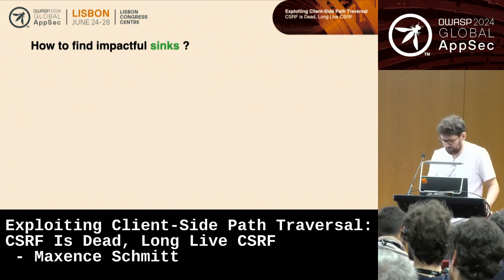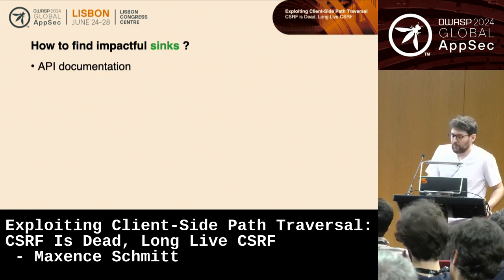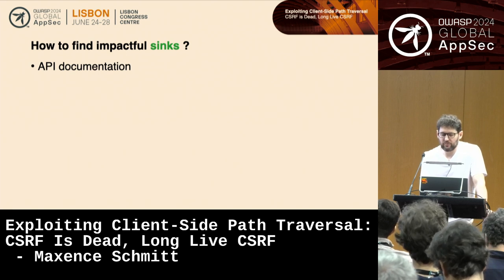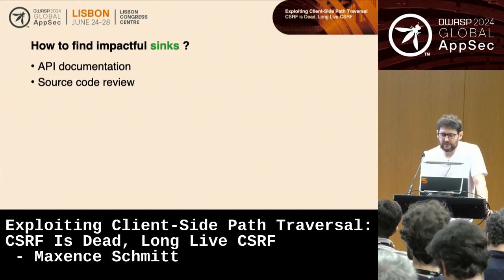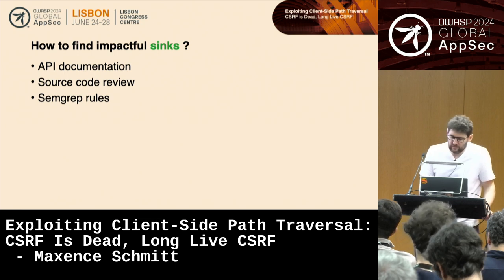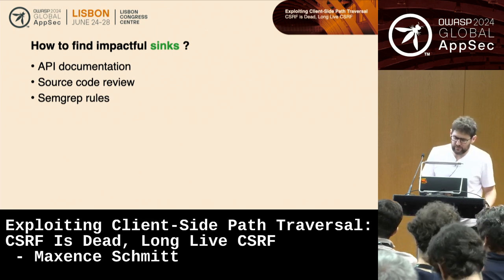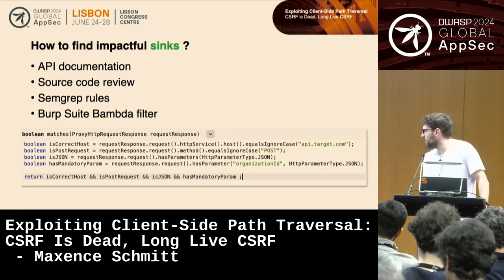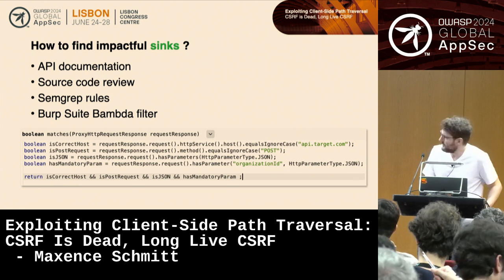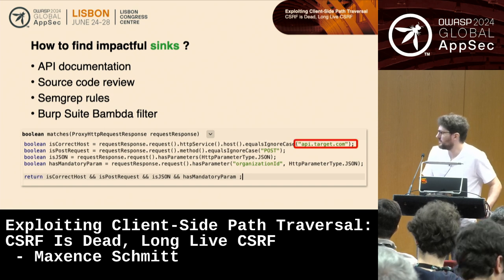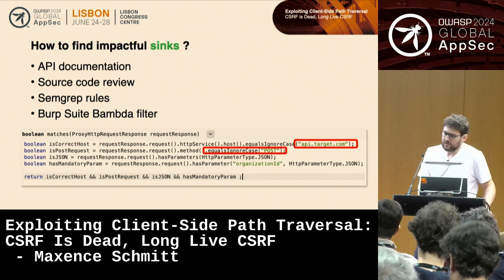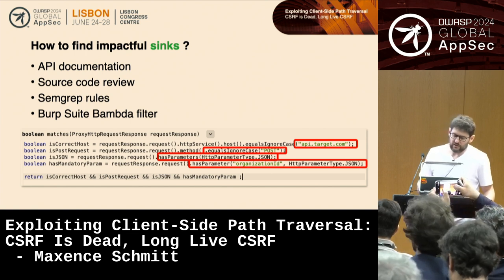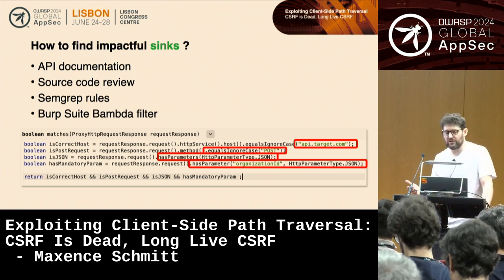To find impactful sinks, you can go through API documentation looking for POST endpoints with no required body parameters. Source code review is very helpful if you have it. You can use grep rules or a good SAST tool to find things inside the target app. Also, Burp's built-in filter feature is very useful: for example, list all endpoints linked to api.target.com that are POST requests with a JSON parameter and at least one parameter called organization_id. Configure your proxy filter with all these requirements to identify potential sinks.